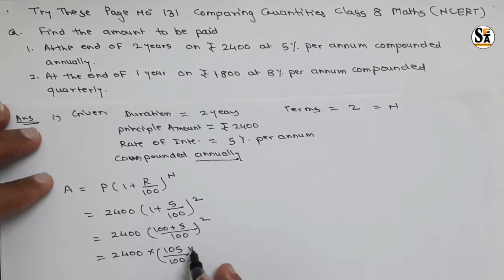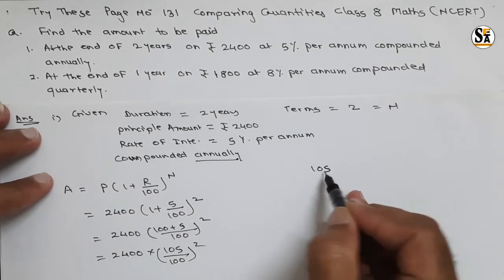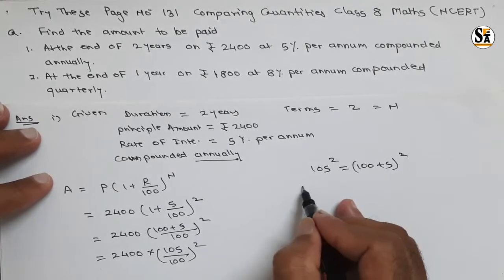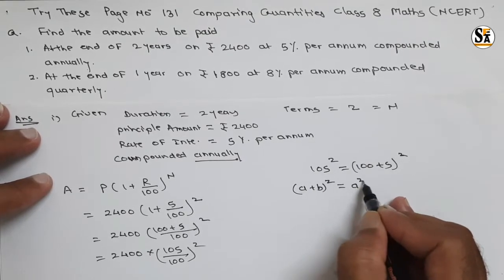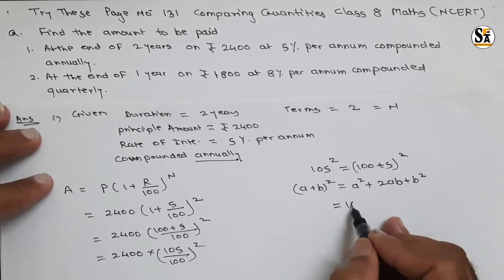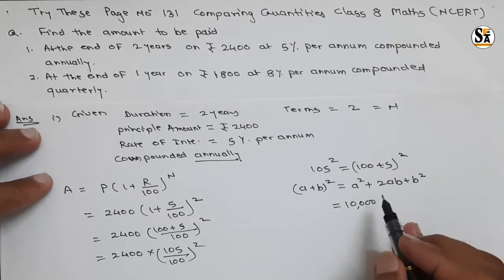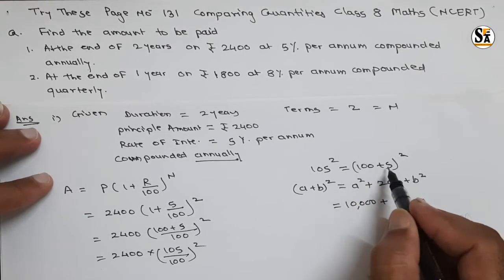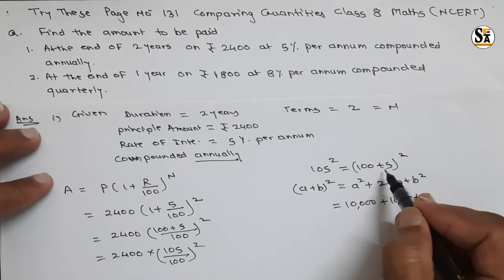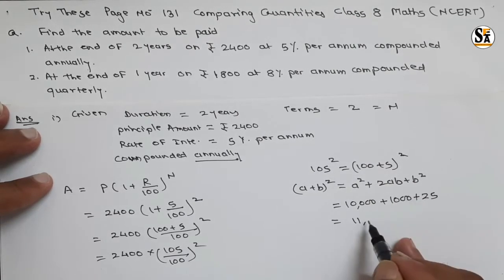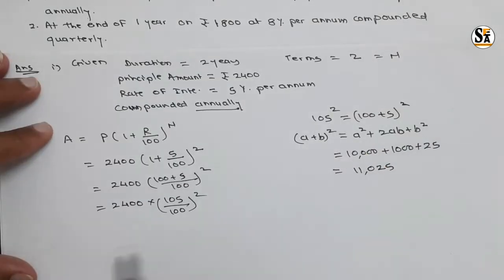To calculate the square of 105, write it as (100 + 5)². We know the formula (a + b)² = a² + 2ab + b². So: square of 100 is 10,000; 2ab means 2 × 100 × 5 = 1,000; and square of 5 is 25. Adding these: 10,000 + 1,000 + 25 = 11,025.